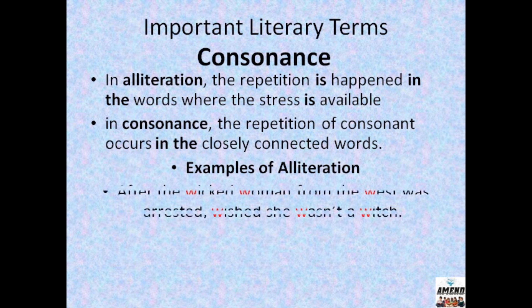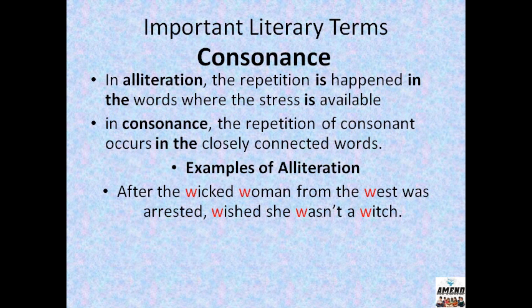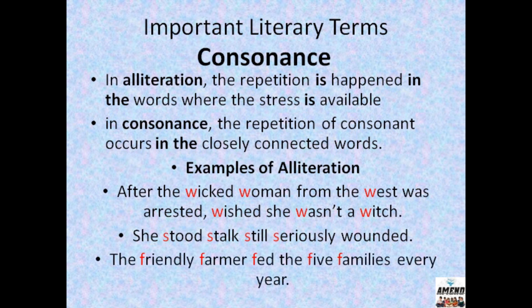Examples of alliteration: 'After the wicked women from the west was arrested, wished she wasn't a witch' — here the W sound repeats in 'wicked,' 'women,' 'west,' 'was,' 'wished,' and 'witch.' Next: 'She stood stock still seriously wounded' — the S sound repeats in 'stood,' 'stock,' 'still,' and 'seriously.' Next: 'The friendly farmer fed the five families every year' — the F sound repeats in 'friendly,' 'farmer,' 'fed,' and 'five families.'